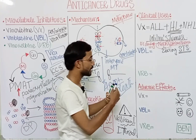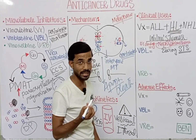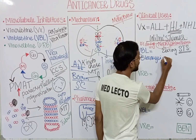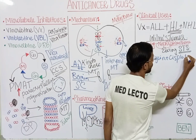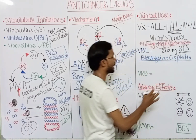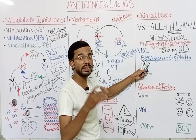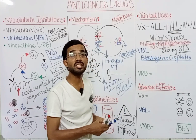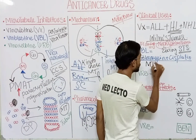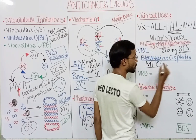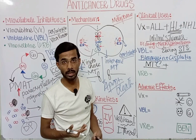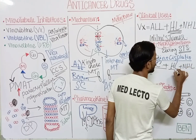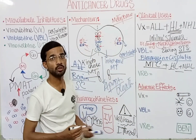Vinblastine is used in combination therapy with bleomycin (an anti-tumor antibiotic) and cisplatin for metastatic testicular carcinoma — testicular cancer that has spread to other parts of the body. Vinblastine is also used in Hodgkin lymphoma and non-Hodgkin lymphoma.